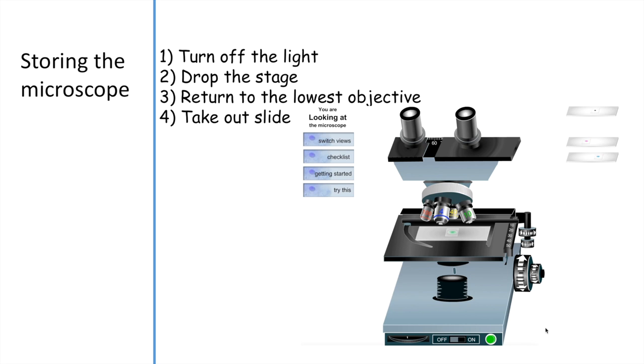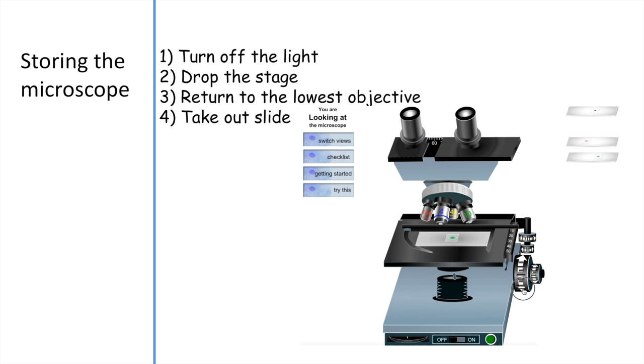There are steps to return the microscope back to its storage place. The first step is you're going to need to turn off the light. The light is located either on the front, back, or the side. You're going to turn that off and then you're going to want to drop the stage down. Turning the knob downwards is going to bring the stage down. Then you want to return the objectives to its lowest objective. That's going to be the number four, and this gives you a lot of space so you can take the slide out from the microscope.